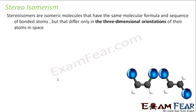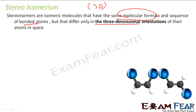Let us talk about stereoisomerism now. These are generally three-dimensional isomers because they have the same molecular formula and the same sequence of bonds, but when you see them in the three-dimensional world, the three-dimensional orientation is different. For example, in one arrangement the two chlorines are together on the same side, while in the other the two chlorines are on opposite sides. These kinds of isomers are called stereoisomers.